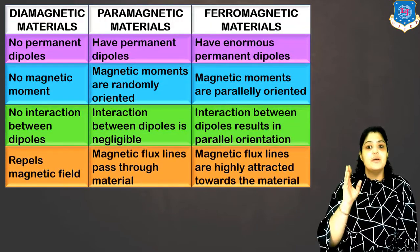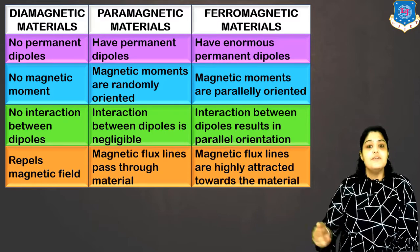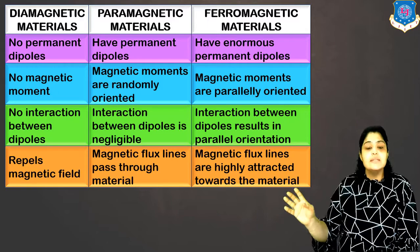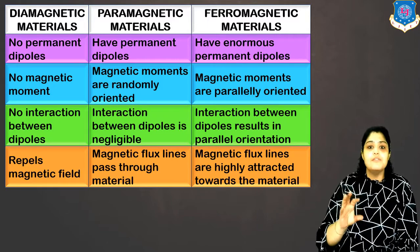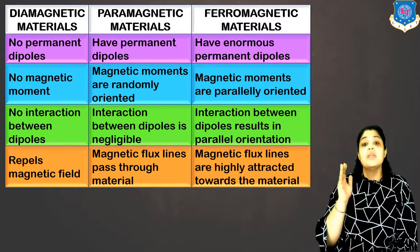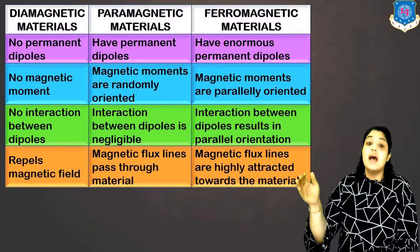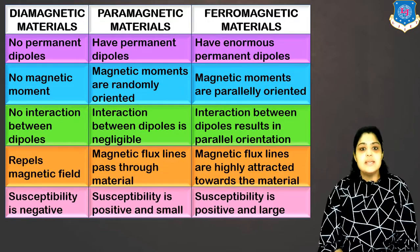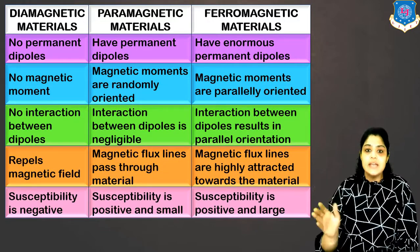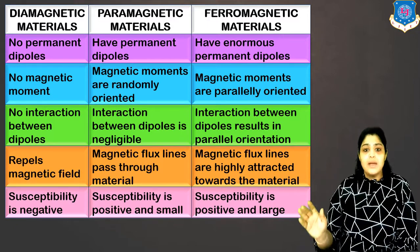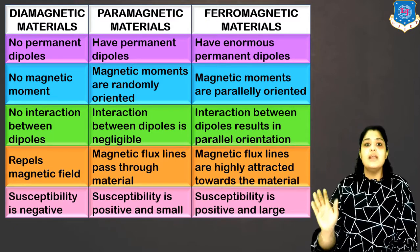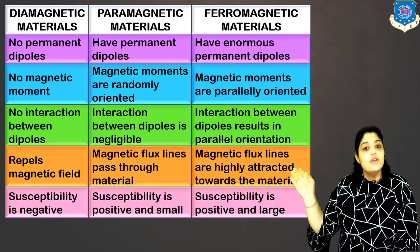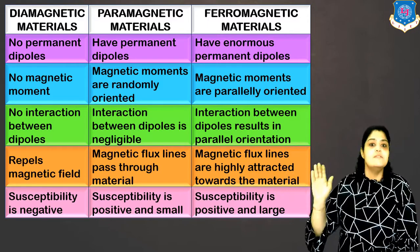Regarding external magnetic field behavior: diamagnets will always repel the external magnetic field. In paramagnets, the magnetic field lines pass through it. In ferromagnets, the magnetic field lines are highly attracted towards the material. For susceptibility: diamagnets have a negative susceptibility of minus one. Paramagnets have a positive value of susceptibility but it is very small. Ferromagnets have a susceptibility that is positive and very large.